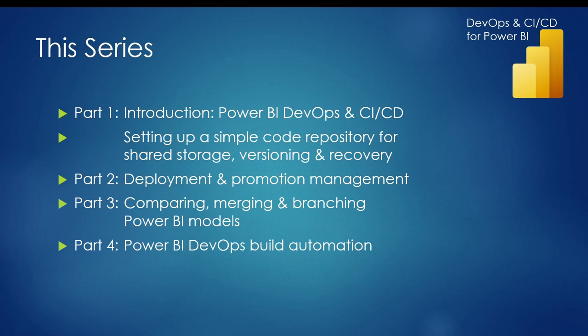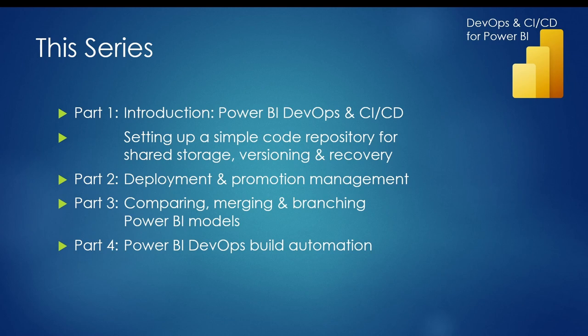That's it for part one. I introduced Power BI DevOps and CICD and showed you how to set up a minimal required simple code repository for shared storage, versioning, and recovery. You should always do this at minimum, even in small to mid-scale Power BI projects. If you're working on more advanced projects and have greater needs around DevOps and CICD, be on the lookout for parts two, three, and four, where I'll talk about deployment and promotion management, comparing, merging, branching, and differencing Power BI models, and finally, Power BI DevOps build automation for advanced IT-driven larger-scale projects. Thanks for watching.